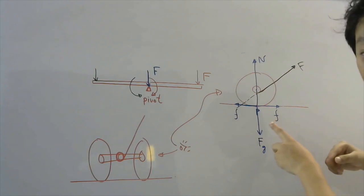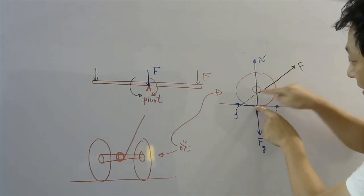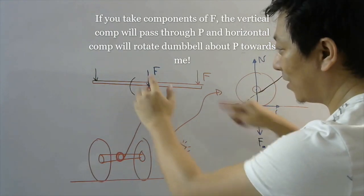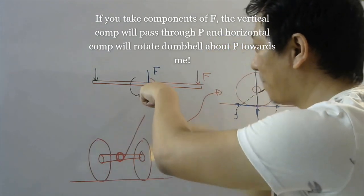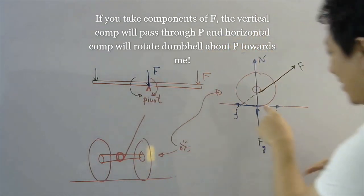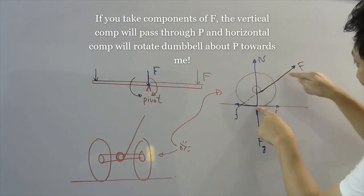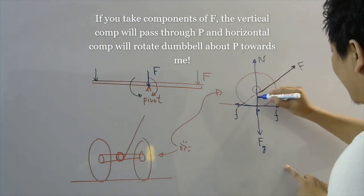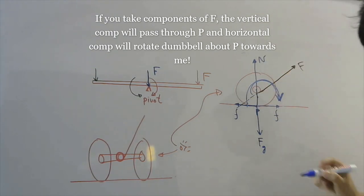Let me show you this way — I want the body to rotate about this point and the force is acting this way. You can see this force will rotate the body this way, just like the see-saw example. Similarly, about the contact point, my pulling force will rotate the dumbbell towards me.